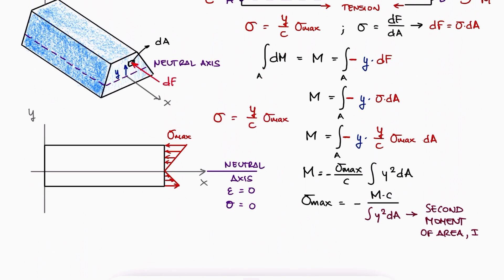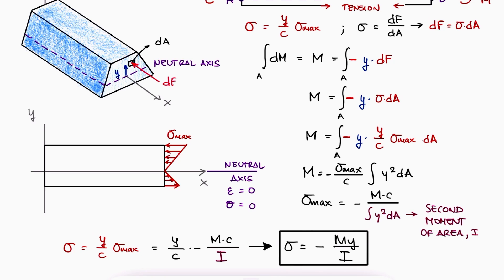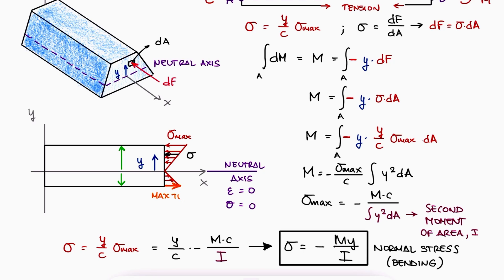Going back to the stress equation, we see that in general sigma is equal to minus My over I, which is the general equation for normal stress due to bending. For any value y from the neutral axis, you can find the normal stress with this expression. This is helpful to understand that you don't need to find the maximum value c, but you can move upward or downward from the neutral axis to find the compressive or tensile stress at the top or bottom plane.